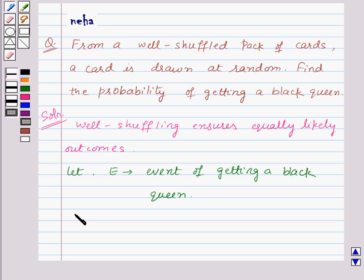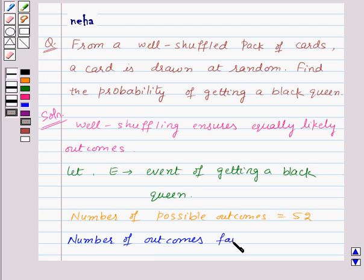There are 52 cards in a pack. So that means number of possible outcomes will be equal to 52. And in a pack of cards there are two black queens. So number of outcomes favorable to the event E will be 2.